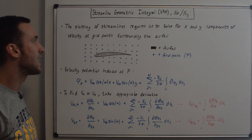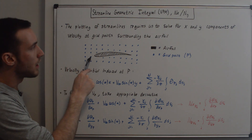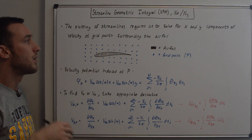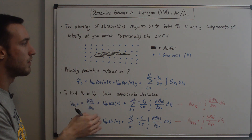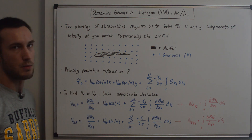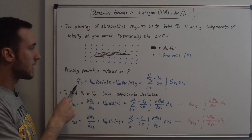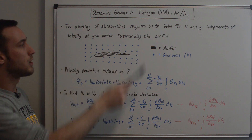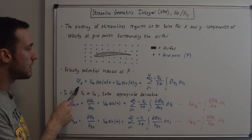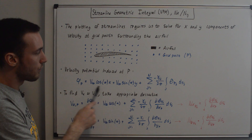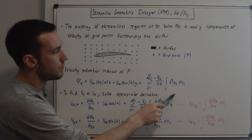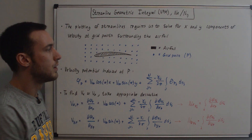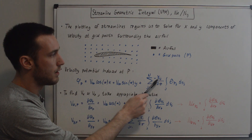Every one of these grid points can be thought of as the P point that we've always used to generalize our velocity potential equation. Here's the general velocity potential equation for the velocity potential induced at an arbitrary point P outside of the airfoil. Phi sub P equals the free stream term plus the term due to the vortex panels that approximate the airfoil.